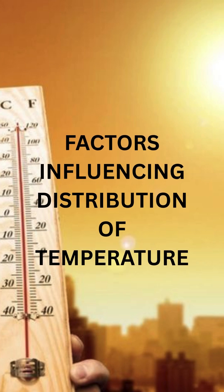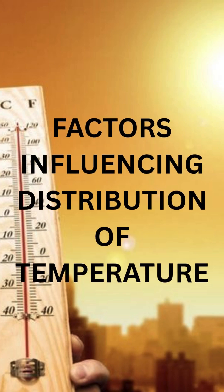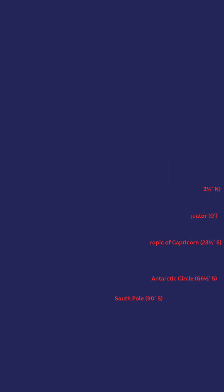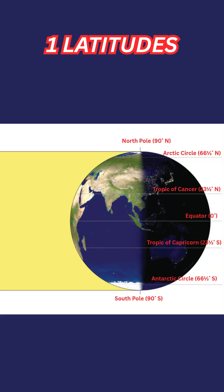Factors Influencing Distribution of Temperature. First, Latitudes. The incidence of sun's rays are more inclined away from the equator towards the poles. Thus, the temperature gradually decreases towards both the poles. On the basis of this, different temperature zones may be formed.